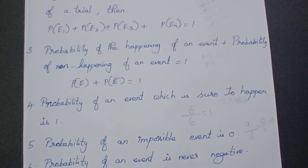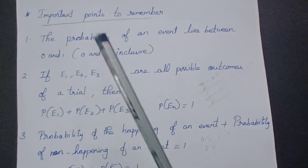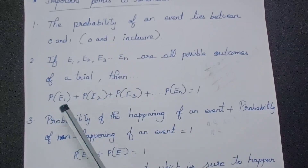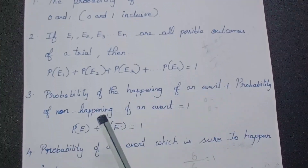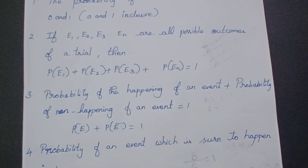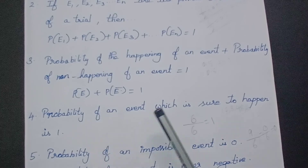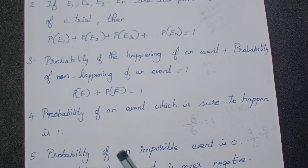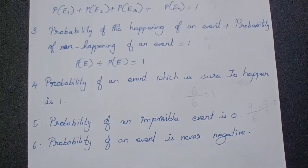The probability of an event is never negative. So there are 6 key points to remember: probability of an event always lies between 0 and 1; the sum of all event probabilities equals 1; probability of happening plus probability of not happening equals 1; a sure event has probability 1; an impossible event has probability 0; and probability is never negative.